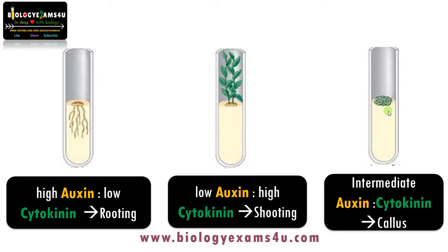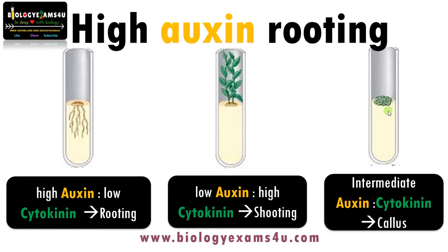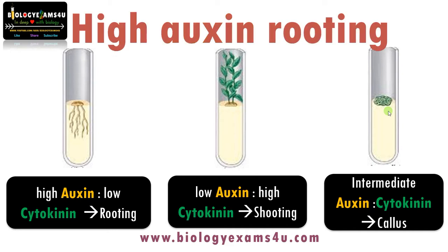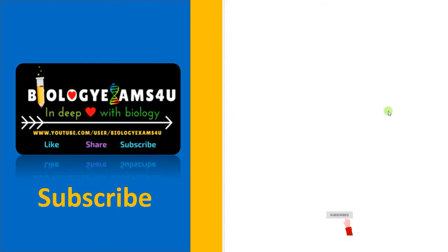We can remember it easily: high auxin favors rooting, low auxin favors shooting, and intermediate concentration favors callus. Thank you so much for your support — you are with biologyexamsforyou.com.